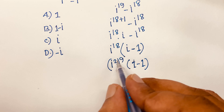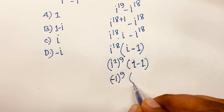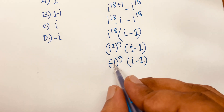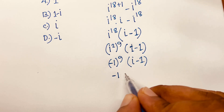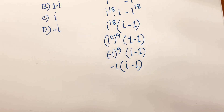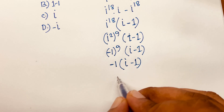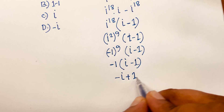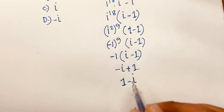We know that i squared equals minus 1, so this becomes (minus 1) to the power 9, times (i minus 1). Since 9 is an odd number, (minus 1)⁹ equals minus 1. So we get minus 1 times i, which is minus i, and minus times minus 1 gives plus 1. The answer is 1 minus i.